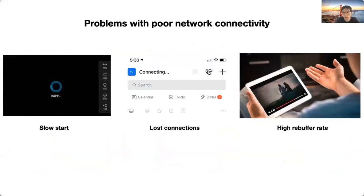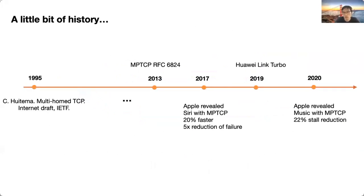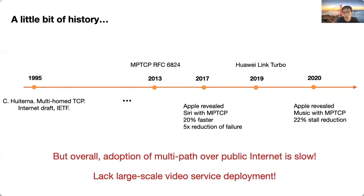The first multipath draft was proposed by Christian Guitema in 1995, but it was not until 2013 that MPTCP became RFC. Now Apple uses MPTCP for Siri and music, and Huawei also introduces Link Turbo, but overall the adoption of multipath over the public internet is slow. Current large deployments such as Siri and Apple Music are all audio apps and there is no large-scale deployment of video services using multipath. So in this work, we try to answer: is it worthwhile to bring multipath to large-scale video services?